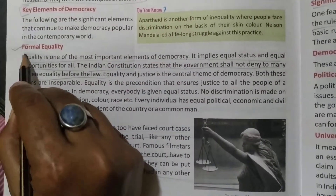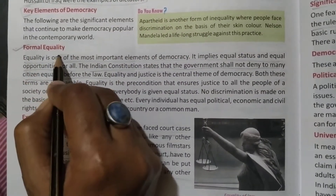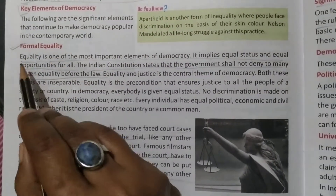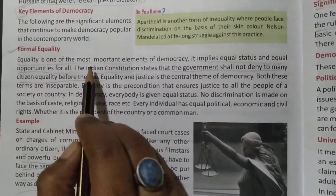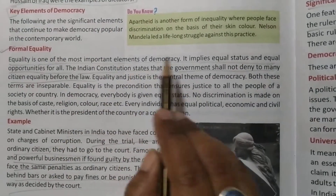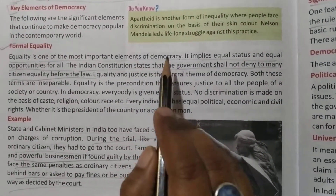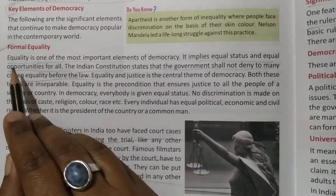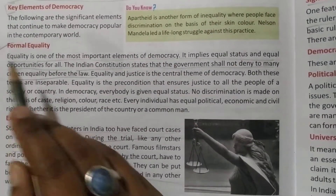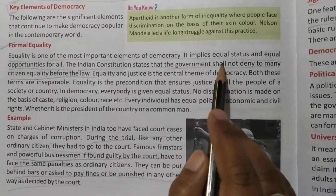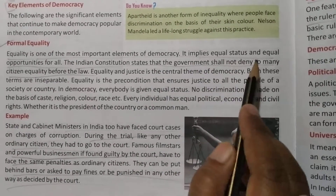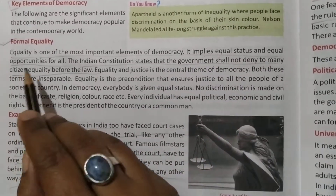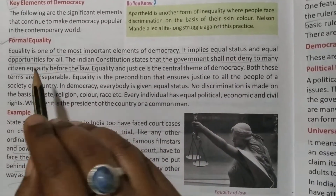Number one point is formal equality. Equality is one of the most important elements of democracy. The most main thing is equality. It implies equal status and equal opportunities for all.